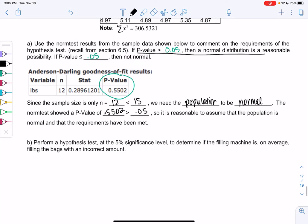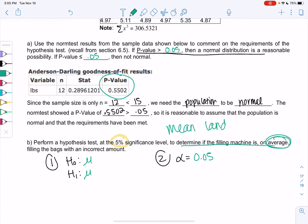Let's find our hypothesis test and then put the data in the calculator. Perform a hypothesis test at 5%, so alpha is 0.05, to determine if the filling machine, on average, is filling the bags with the incorrect amount. The correct amount would be 5, incorrect would be anything not 5. Too big, the company's losing money. Too small, customers are upset.